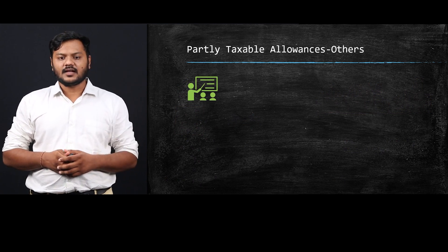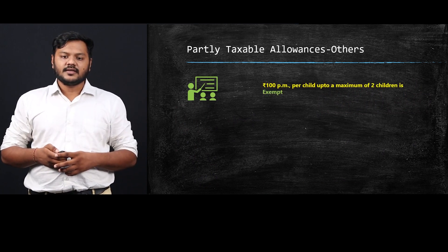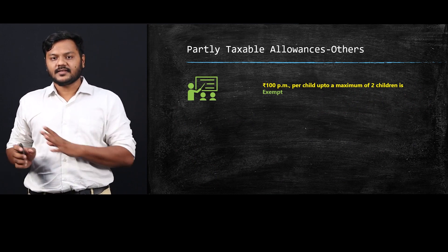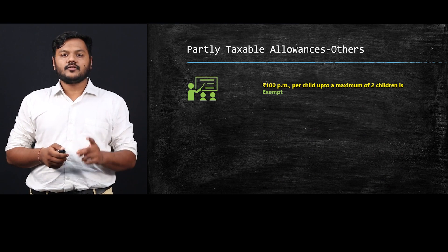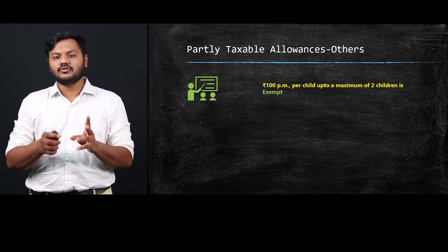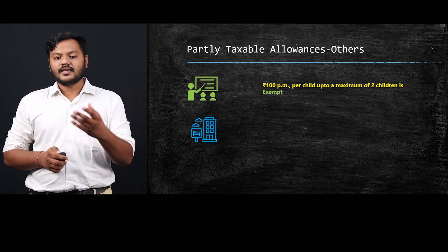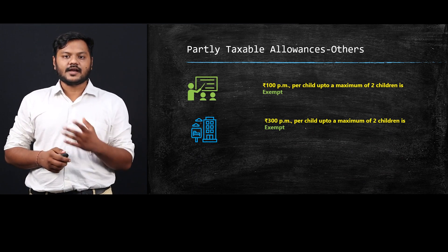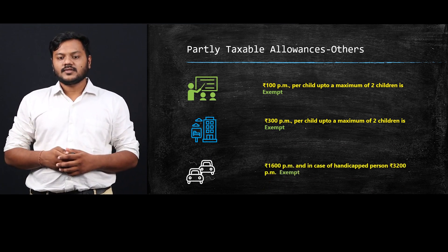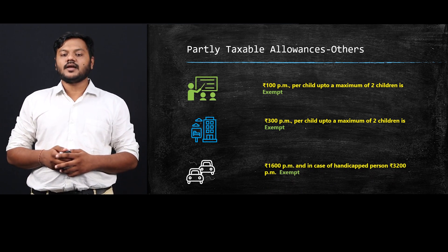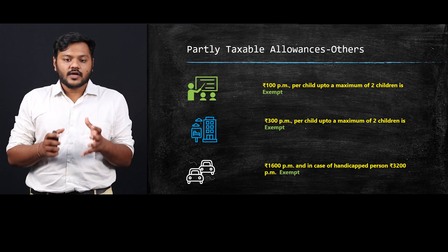Moving to other partly taxable allowances: for education expenses for children, ₹100 per month per child is exempt, but only up to two children. So even with three children, the maximum exemption is ₹200 per month. For hostel allowances, it is ₹300 per month per child, again up to a maximum of two children. For conveyance allowance, if the company pays conveyance, it is exempt up to ₹1,600 per month, and ₹3,200 per month for handicapped employees.